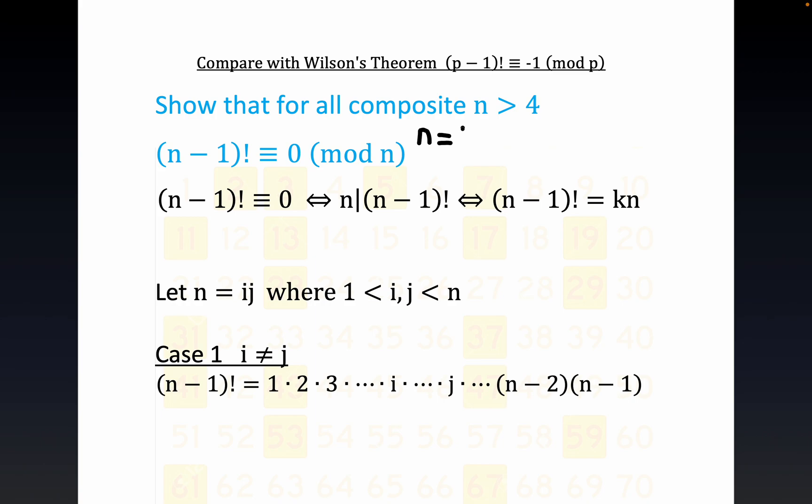It's pretty easy to see if you take n equals 4, you would get 3 factorial which is 6. I'm just going to write this down: 3 factorial is not congruent - we'll just use the negated congruence relation, put the slash through there - it's not congruent to 0 mod 4. 4 is the smallest composite number.